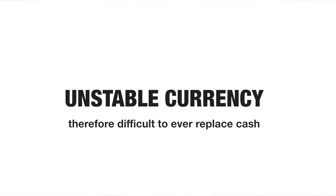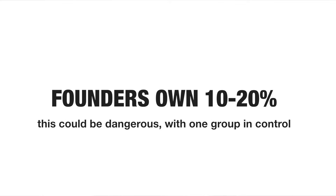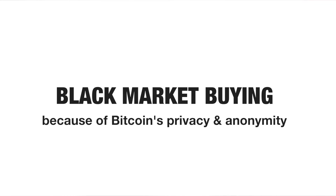But there are also some big negatives about Bitcoin. The first is that it fluctuates very, very highly. A huge percentage of Bitcoin is reserved for the founder or founders of Bitcoin, which definitely creates a super elite. The third con is what most people fear — that it will be used for the black market.